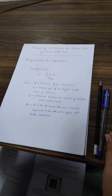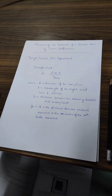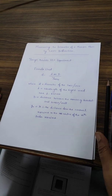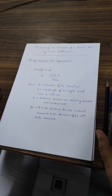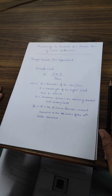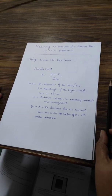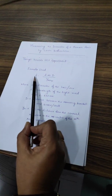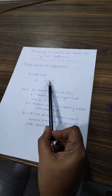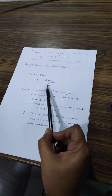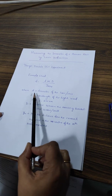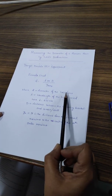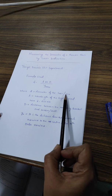Today we are going to determine the diameter of a human hair by using the laser diffraction technique. This technique is based on Young's double slit experiment, where the formula we are using is d equals lambda times m times D upon ym. Here, small d is the diameter of the hair, or whatever object whose diameter we are going to determine.